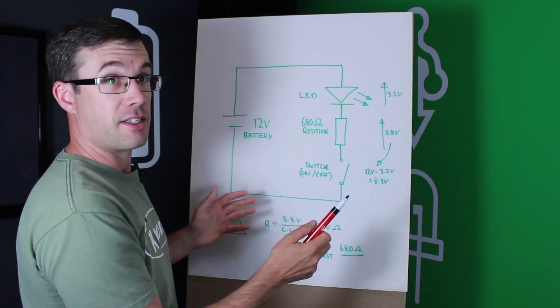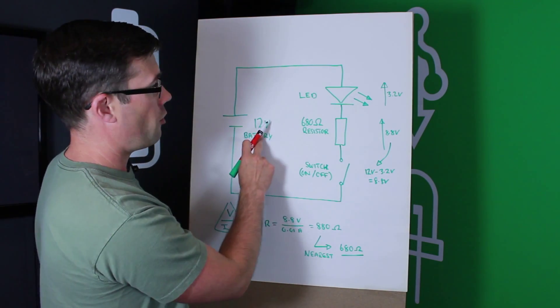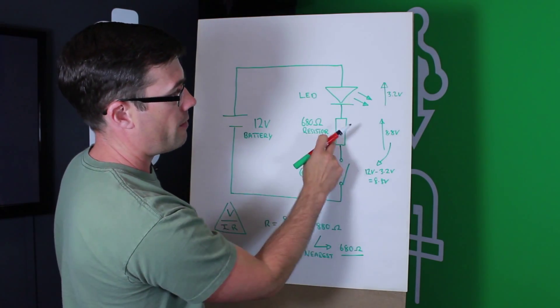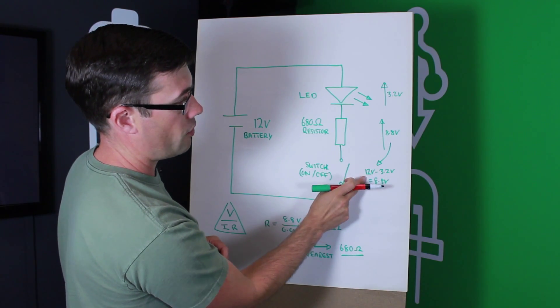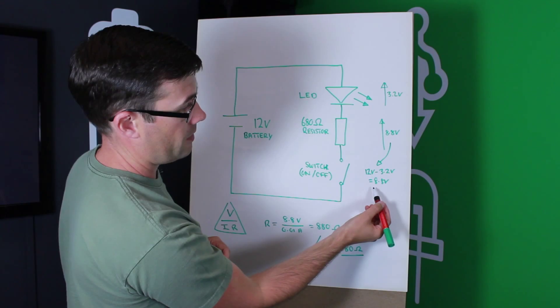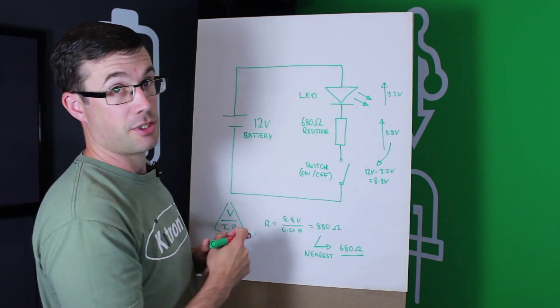Now, we know we've got the 3.2 volts across the LED, but where does the rest of the voltage go? Well, in effect, it's dropped across that resistor. It's its purpose. So, we've got a 12-volt battery, and we have 3.2 volts across the LED here. The remainder is 12 volts less 3.2 volts across the LED. So, we know there's 8.8 volts being dropped through that resistor.